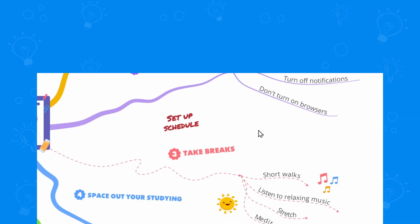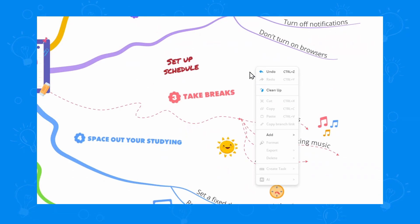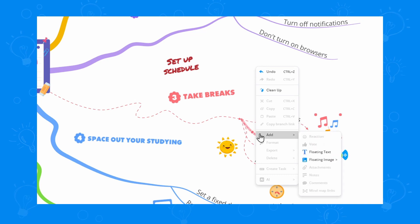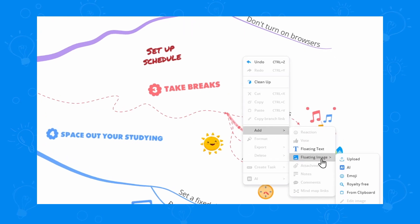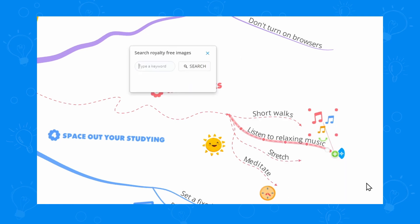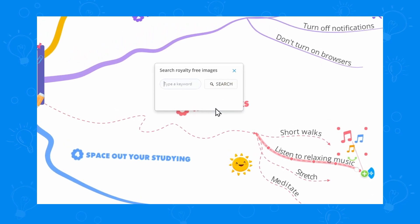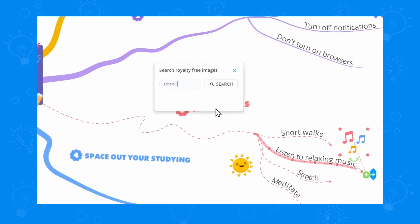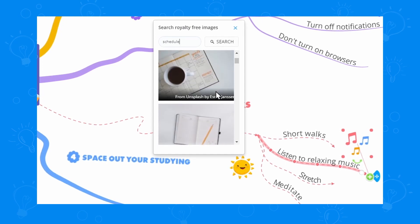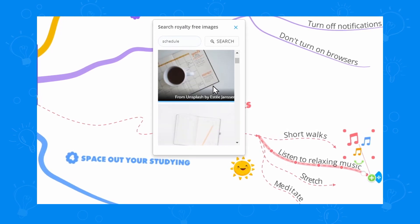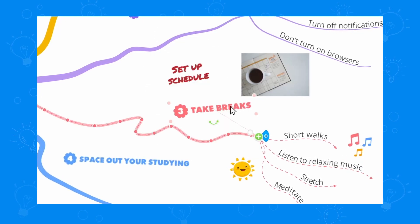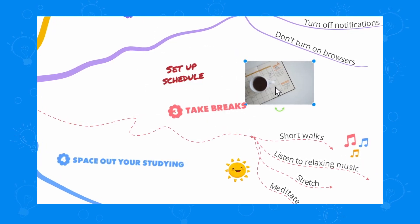Now for the floating images. Same thing — right-click, Add, and now we'll choose Image. We can search for one on Unsplash, and these are going to be royalty-free so you can use them as you like. Then we can resize it a bit and also move it around.